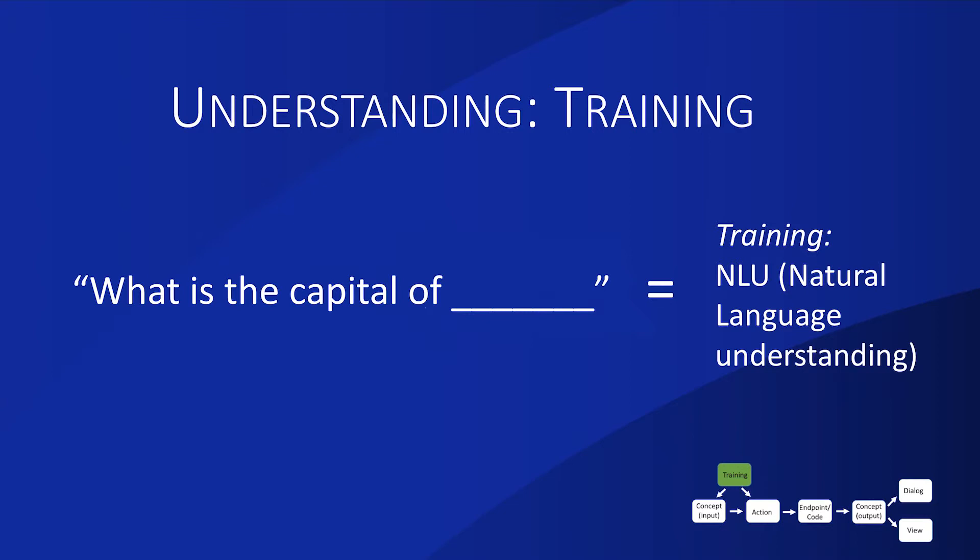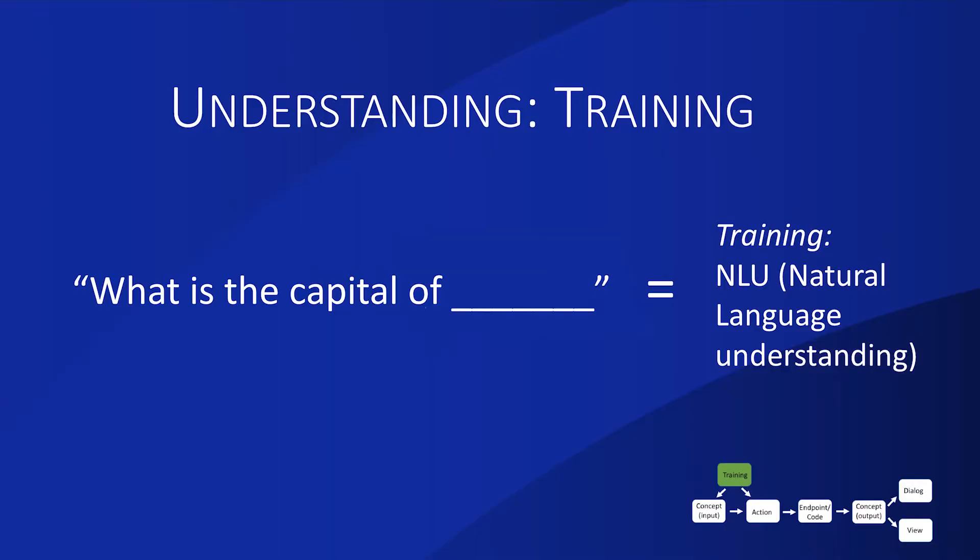Then we need to train Bixby for natural language. In this example, we train one simple sentence: 'What is the capital of [blank state name]?' So: what is the capital of California, Washington, New York, et cetera. We enter 'what is the capital of' and then indicate the end is a special variable — that's our input concept — which then passes on to the Bixby logic and returns the capital of that state.